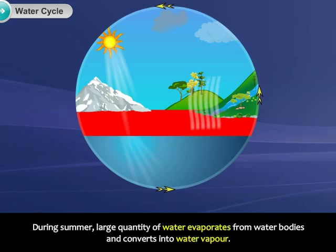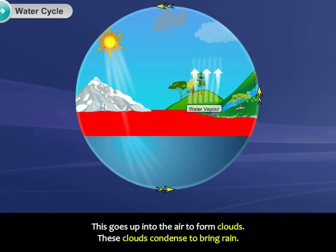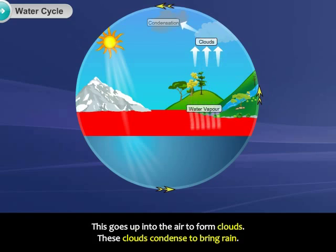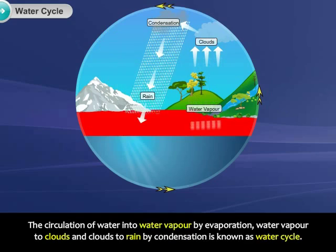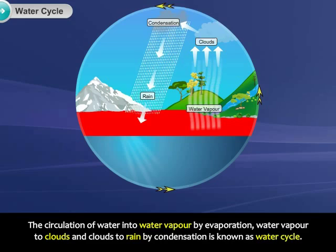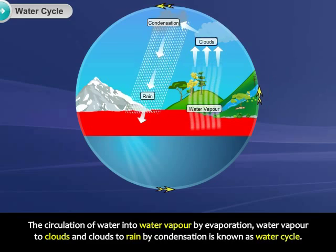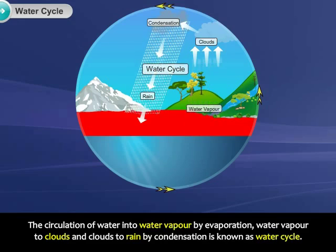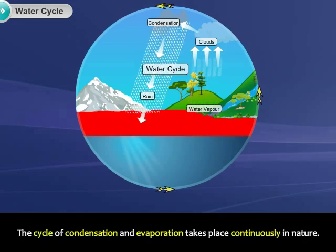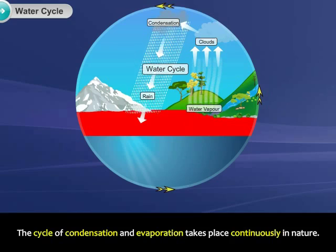During summer, a large quantity of water evaporates from water bodies and converts into water vapor. This goes up into the air to form clouds. These clouds condense to bring rain. The circulation of water into water vapor by evaporation, water vapor to clouds, and clouds to rain by condensation is known as the water cycle. The cycle of condensation and evaporation takes place continuously in nature.